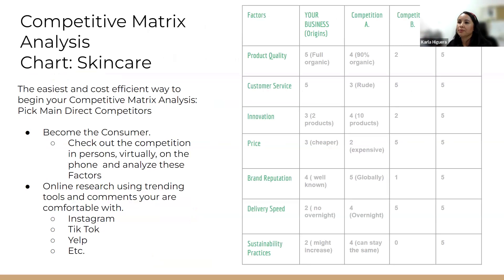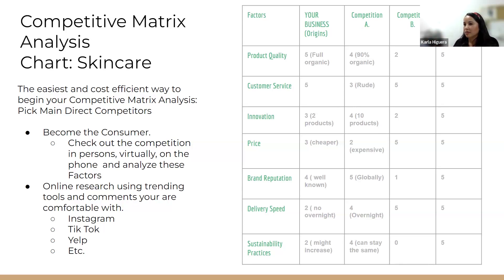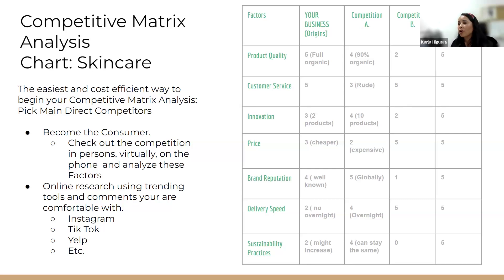This is essentially what the chart looks like. I chose skincare and I chose Origins — these numbers are completely made up. The easiest and most cost-effective way to begin your competitive matrix analysis is to pick your competition and compare from a consumer's point of view. Look at your product and ask: is this fabric as organic as I'd like? Maybe you have a food and beverage business — how is your customer service, your hosting? Are your prices too high compared to the business down the street or 30 minutes away?